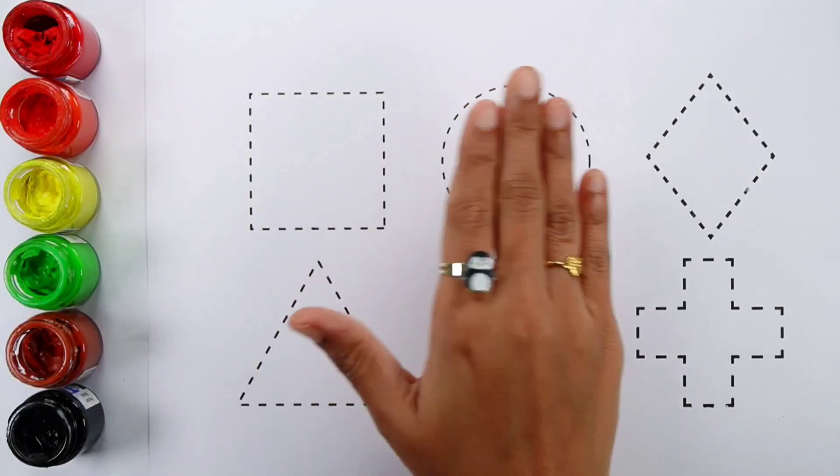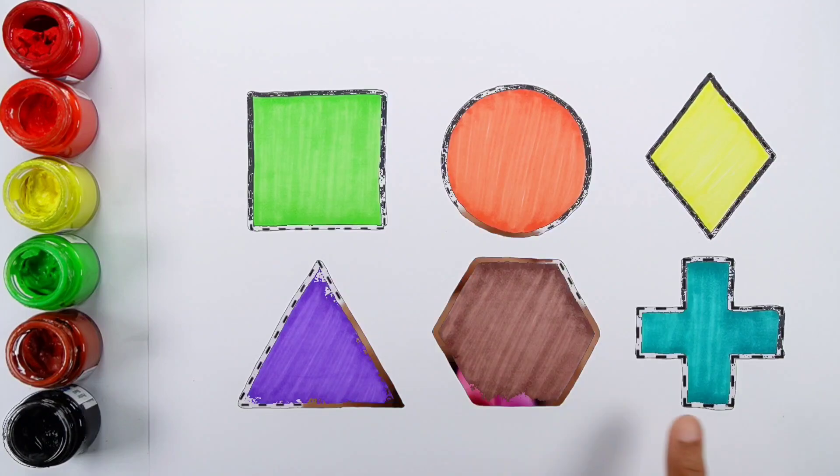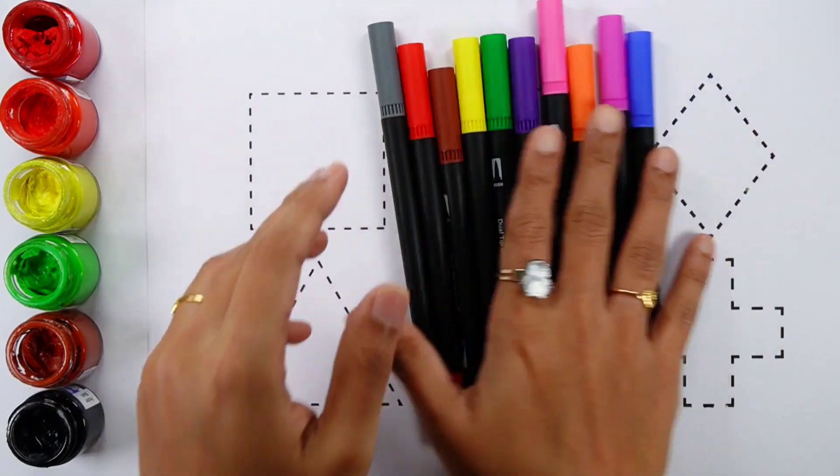Hello guys. Square, circle, rhombus, triangle, hexagon, cross. Let's learn some colors.